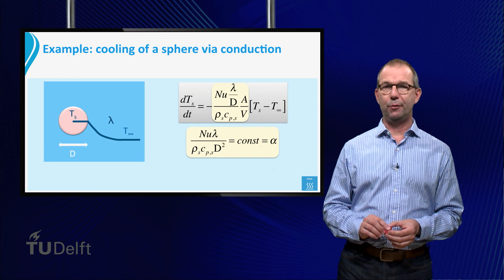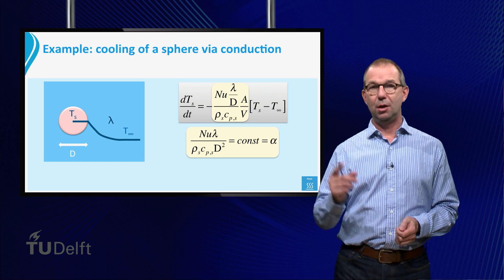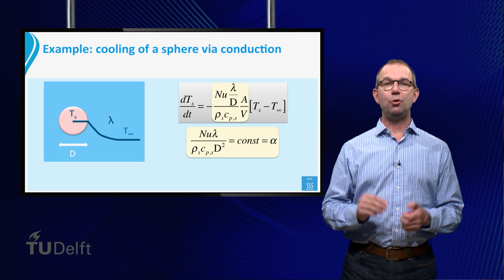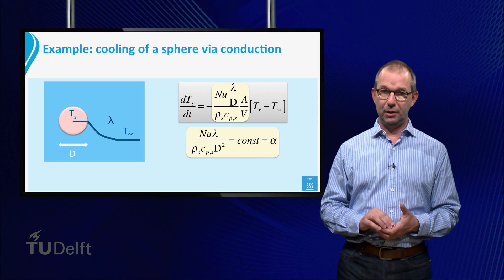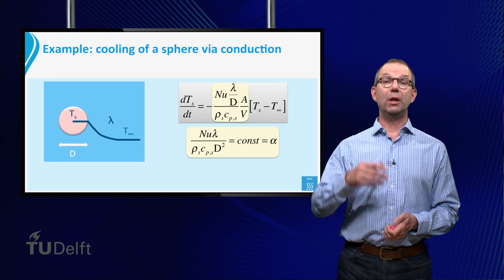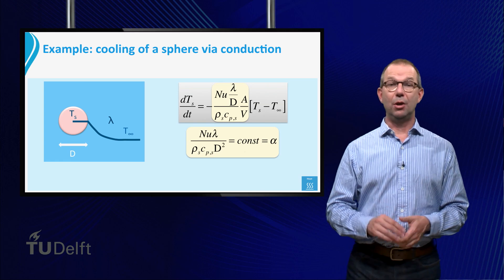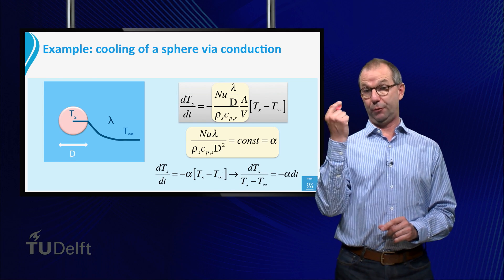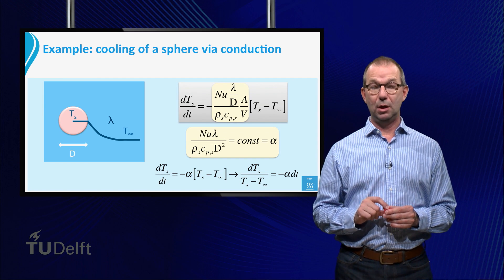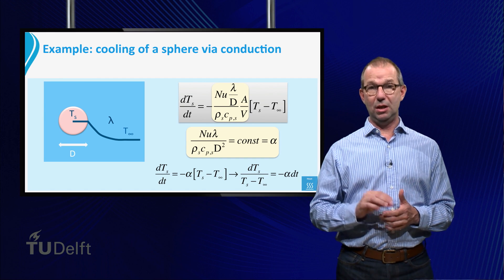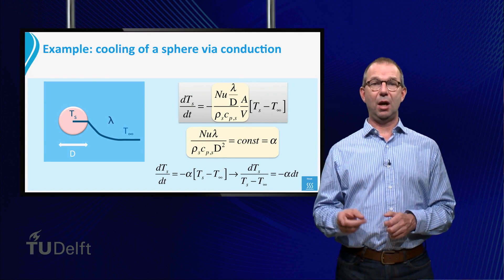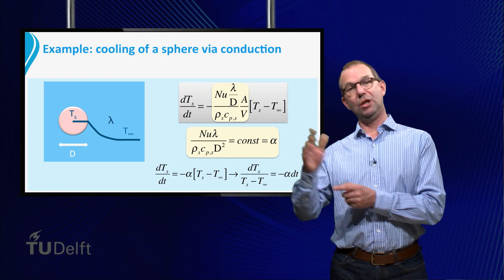The term in front of the driving force on the right hand side, shown in the yellow box, contains only constants. To make the structure of our equation easier to read, we will call it alpha. Thus, we can simplify the equation for the change of the temperature of the sphere to dT sub s/dt equals minus alpha times T s minus T far away.